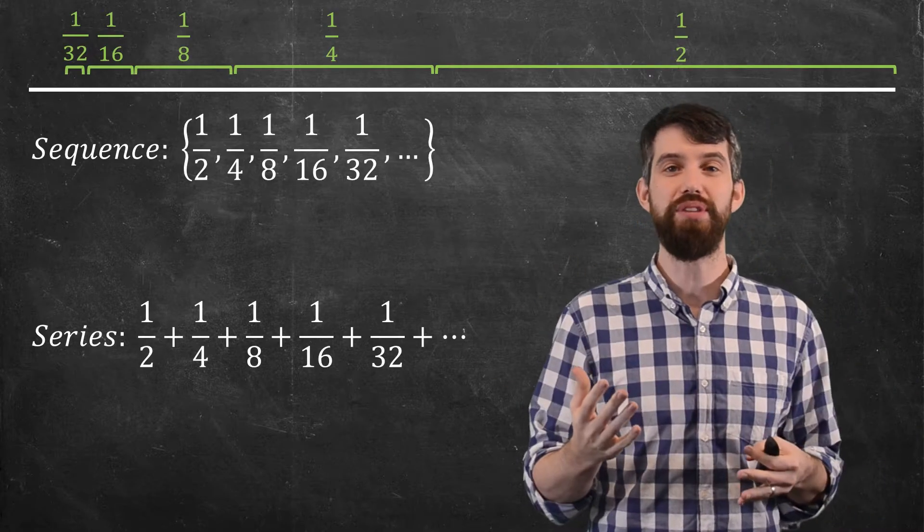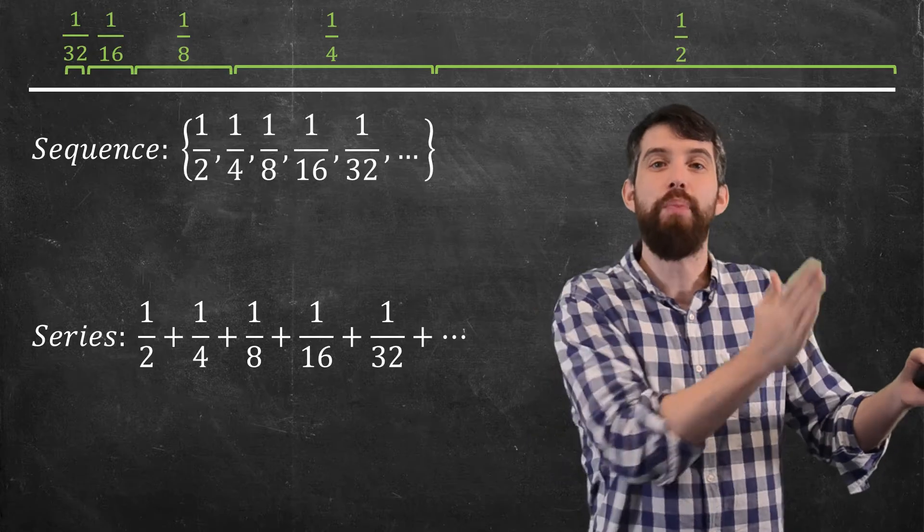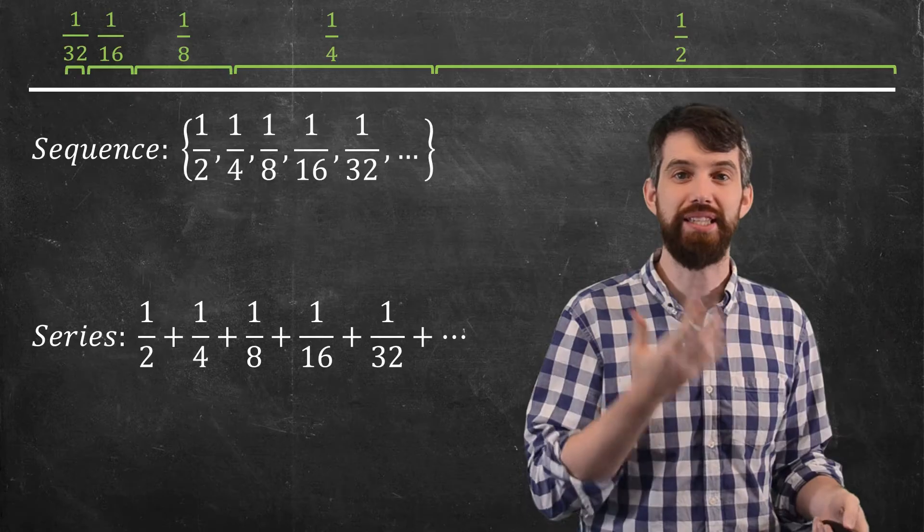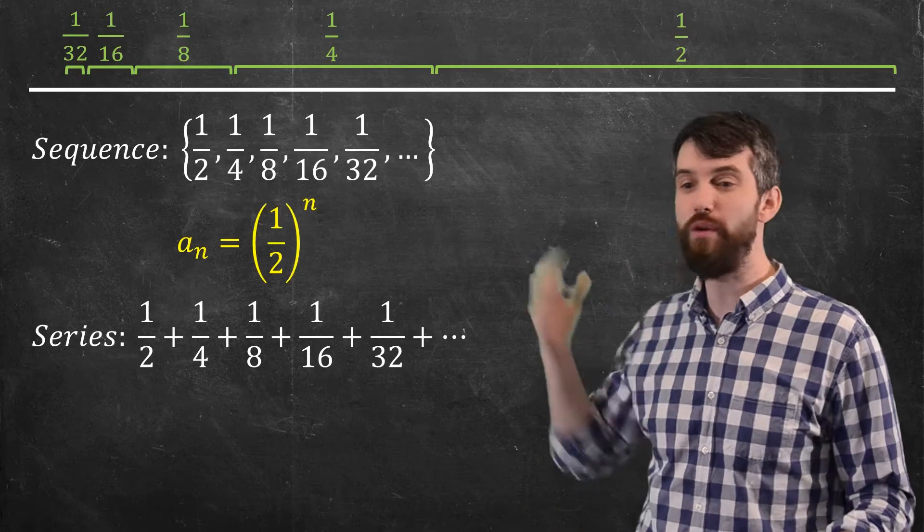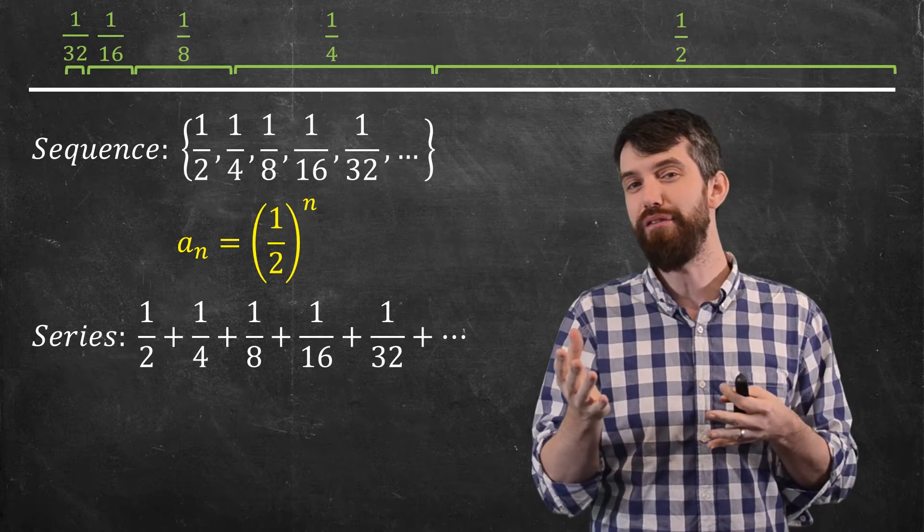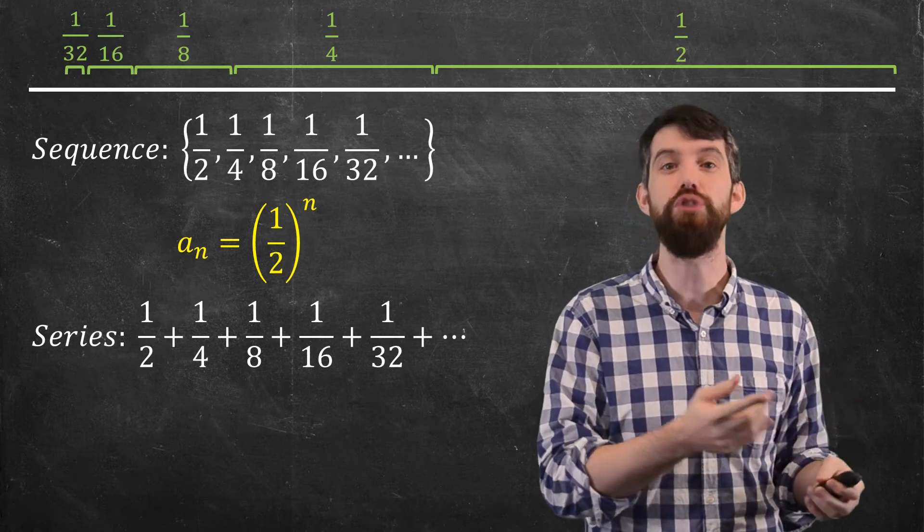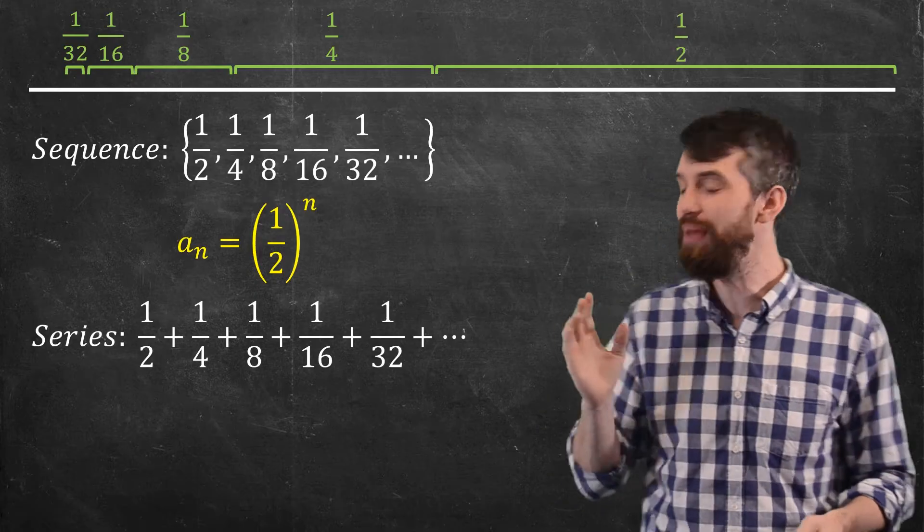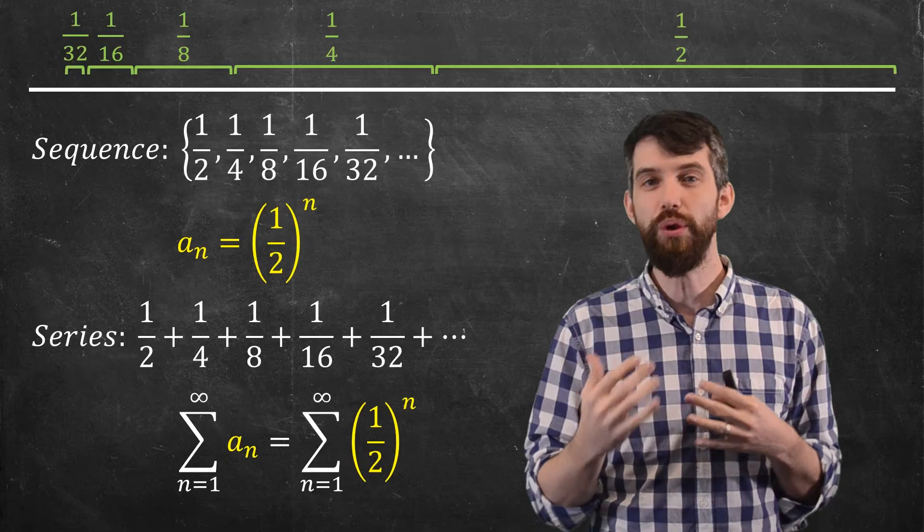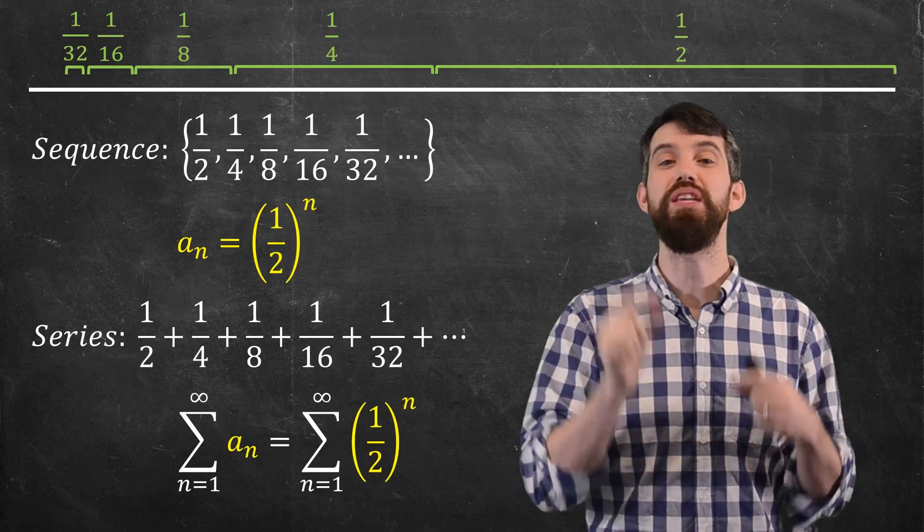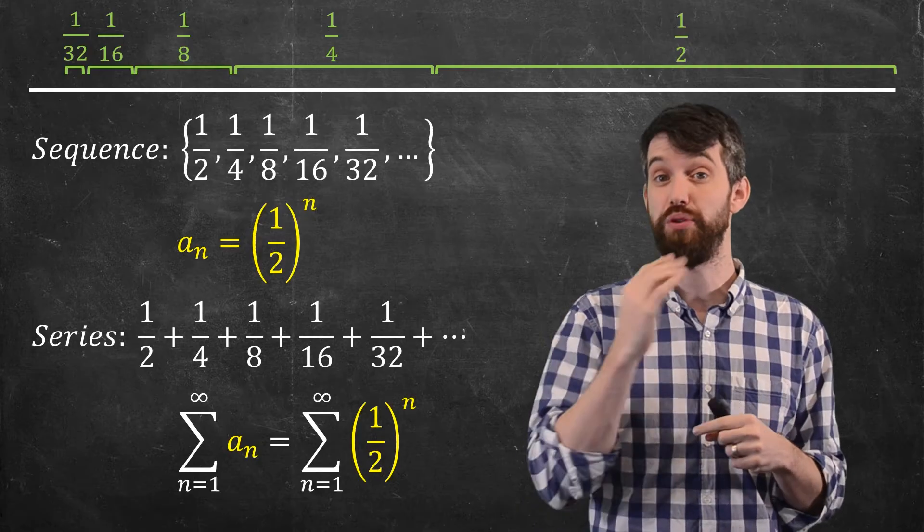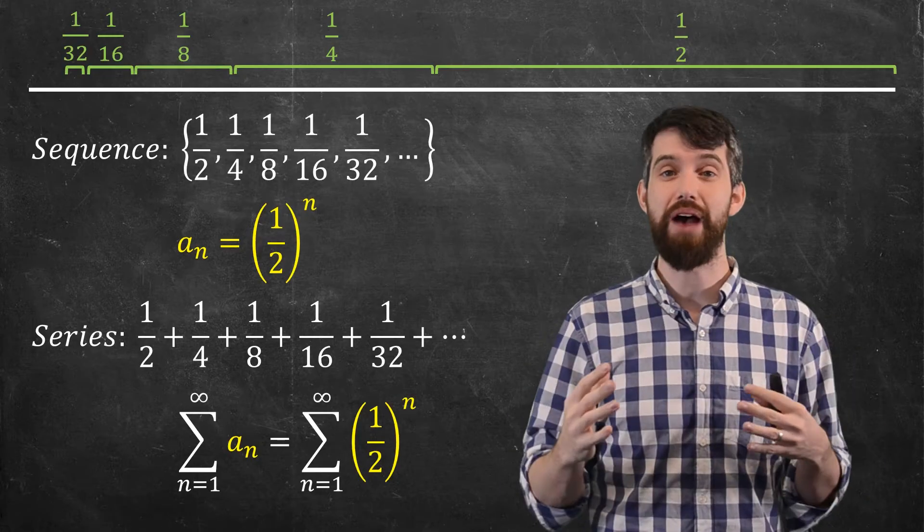A series is when you take a sequence and you add up all of the terms. You don't just list them, you add them together. And if our notation for a sequence was to say, some formula like a_n is, say in this case, one-half to the power of n, then for a series our notation is to put a sigma at the front, a summation sign. We say that the series is the sum from n equal to one up to infinity of the sequence a sub n. So in this case, the sum from n equal to one up to infinity of this one-half to the power of n.